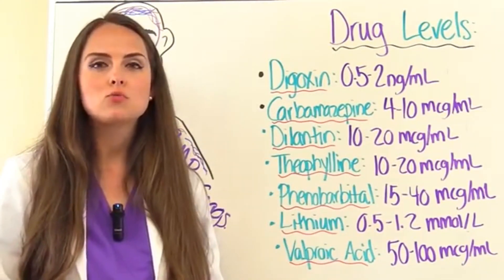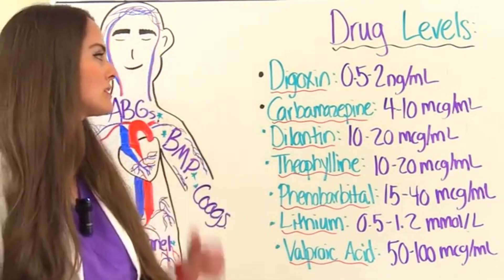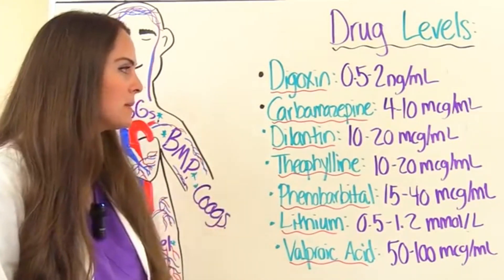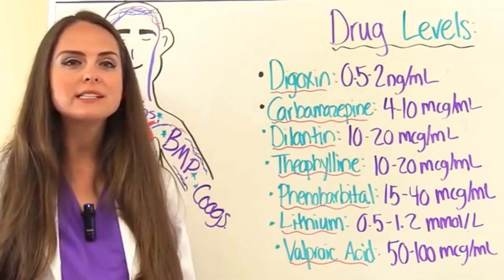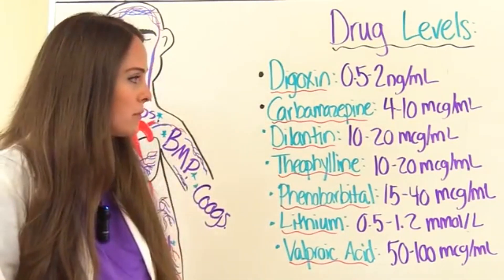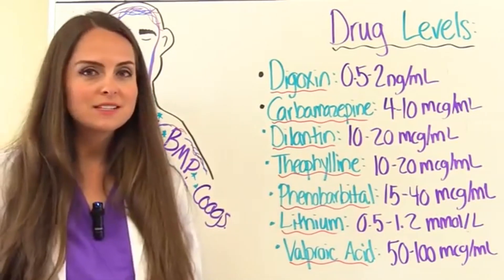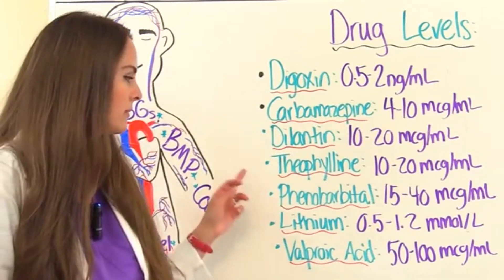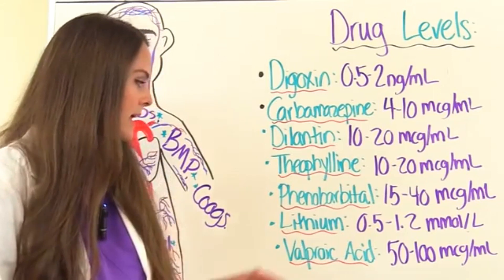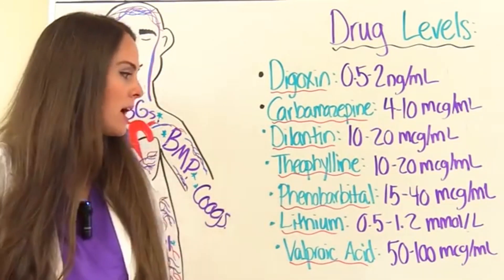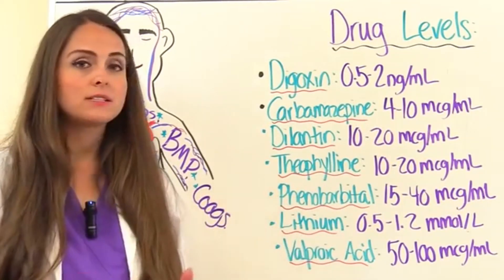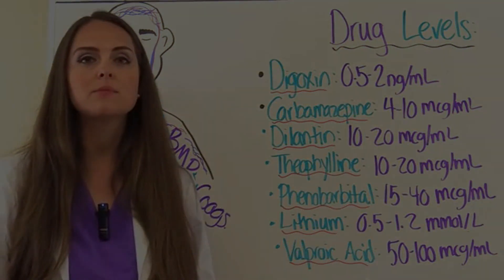Now let's look at the most common drug levels you may encounter on the NCLEX. Digoxin normal level is 0.5 to 2 nanograms per milliliter. Carbamazepine (Tegretol) is 4 to 10 mcg/mL. Dilantin (phenytoin) is 10 to 20 mcg/mL. Theophylline is also 10 to 20 mcg/mL. Phenobarbital is 15 to 40 mcg/mL. Lithium is 0.5 to 1.2 mmol/L. Valproic acid (Depakote) is 50 to 100 mcg/mL.